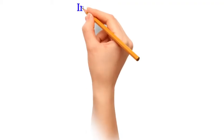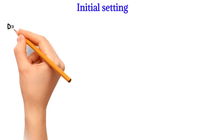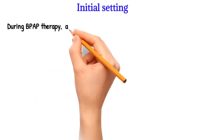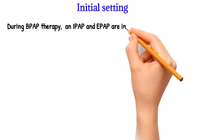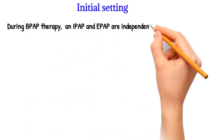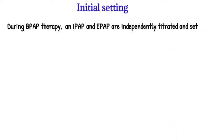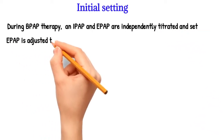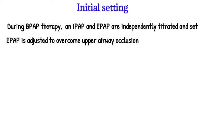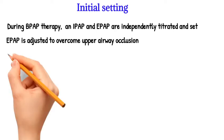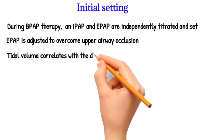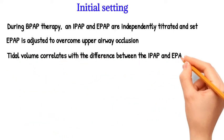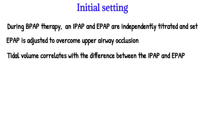Initial Settings: During BiPAP therapy, an inspiratory positive airway pressure (IPAP) and expiratory positive airway pressure (EPAP) are independently titrated and set. EPAP is adjusted to overcome upper airway occlusion, and IPAP is increased to augment ventilation. Tidal volume correlates with the difference between IPAP and EPAP.